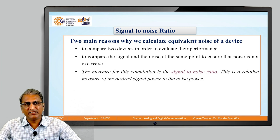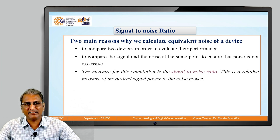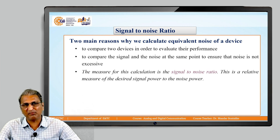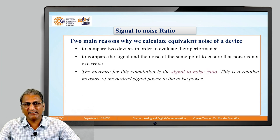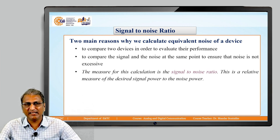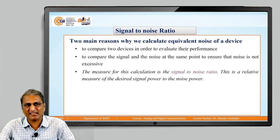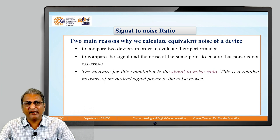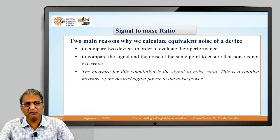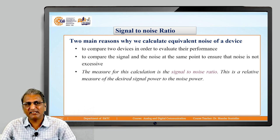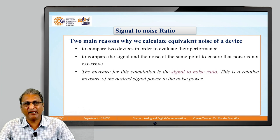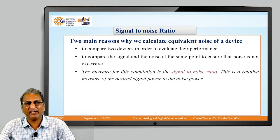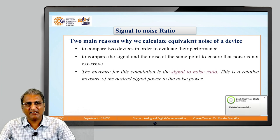There are two reasons why we calculate equivalent noise of a device. To compare two devices in order to evaluate their performance. If there are two devices and we have to check their performance, then individually for device number one, calculate SNR. For device two, calculate SNR. The device having more SNR has better performance. Also, to compare the signal and the noise at the same point to ensure that noise is not excessive. And the measure for this calculation is the signal-to-noise ratio.